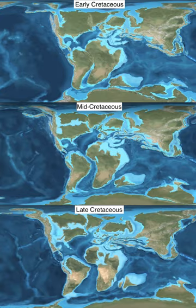The Cretaceous as a separate period was first defined by Belgian geologist Jean d'Omalius d'Halloy in 1822, using strata in the Paris basin and named for the extensive beds of chalk — calcium carbonate deposited by the shells of marine invertebrates, principally coccoliths, found in the Upper Cretaceous of Western Europe. The name Cretaceous was derived from Latin creta, meaning chalk.